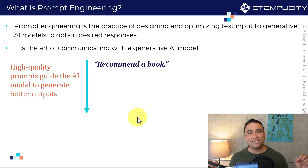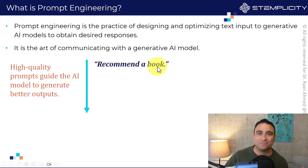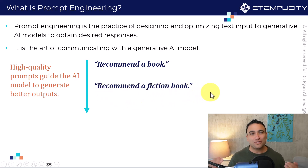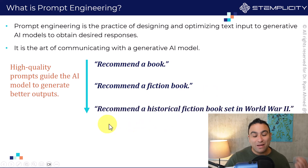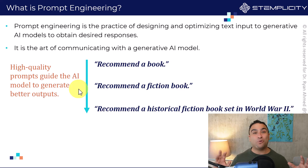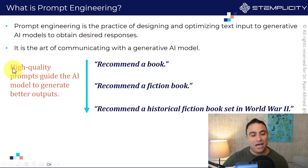Let's assume you would like to ask ChatGPT to recommend a book. You could say 'recommend a book' — that's the prompt input. Or you can be more specific and say 'please recommend a fiction book,' which is an enhancement because the AI knows exactly what you want. Even better: 'recommend a historical fiction book set in World War II' — that's much better because now you're explaining exactly what you're looking for. High-quality prompts guide the AI to generate better outputs.